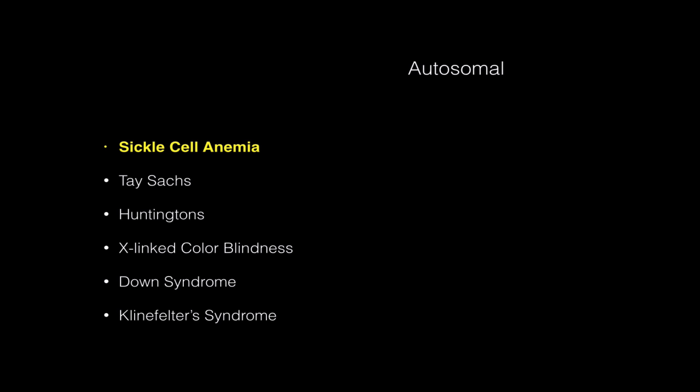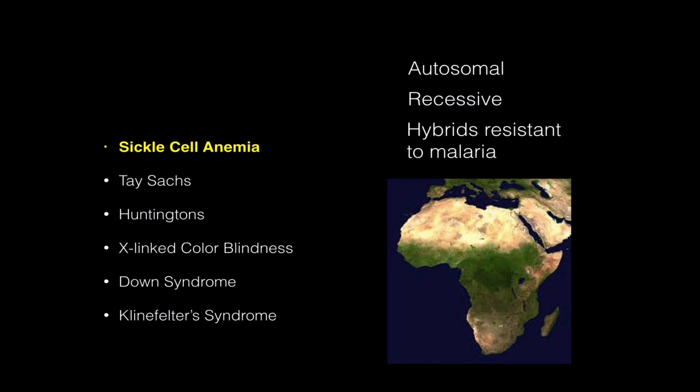Sickle cell anemia is an autosomal trait, which means the gene that causes sickle cell anemia, or the mutation that causes this disease, is on an autosome — it's not a sex chromosome. It's a recessive trait, which means it can skip generations, because the hybrid does not show the disease. You should know that this is a disease that's primarily originating in sub-Saharan Africa, where malaria is very prevalent, and that hybrids are resistant to malaria.